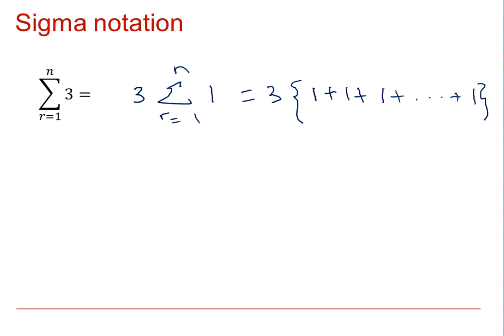So this component will actually be N lots of 1. So we can see that that would then equal 3N. This leads us to the general conclusion that if we are summing the unit between 1 and N, the answer will just be N.